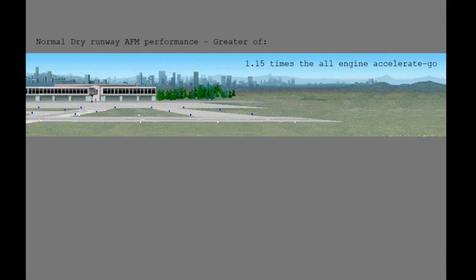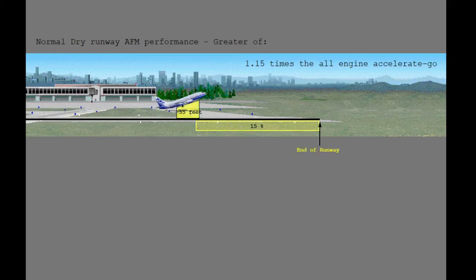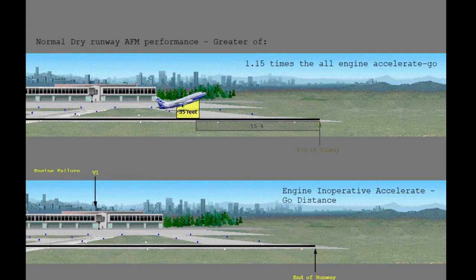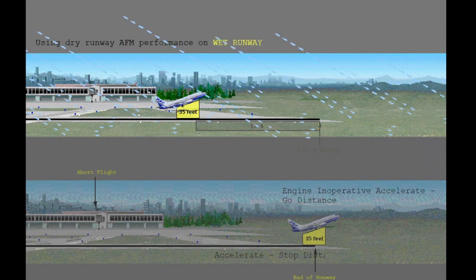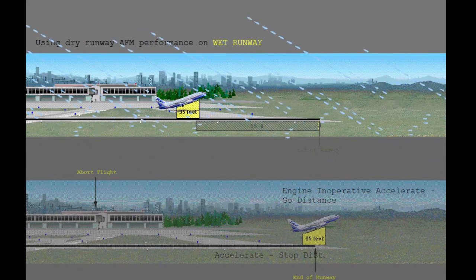The dry runway field length limited weight performance is based on the longer of the all engine accelerate-go distance to 35 feet plus 15%, or the engine inoperative accelerate-go distance to 35 feet, or the accelerate-stop distance assuming a maximum effort stop on a dry runway with no credit for reverse thrust. If the runway is wet and the dry runway performance weight and V1 speed is used, the following would be the result.